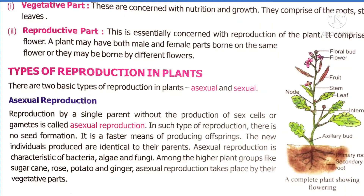Examples of organisms that undergo asexual reproduction include rose, sugarcane, potato, ginger, as well as bacteria, algae, and fungi. All these organisms undergo asexual reproduction in which only a single parent is involved without the production of sex cells or gametes.